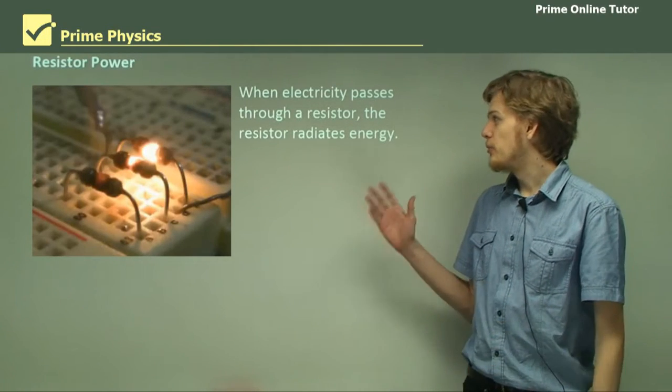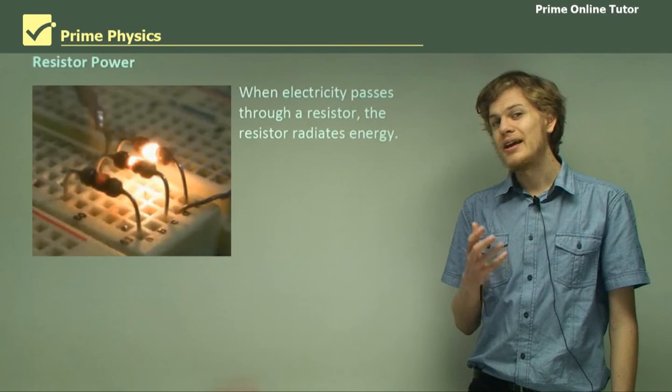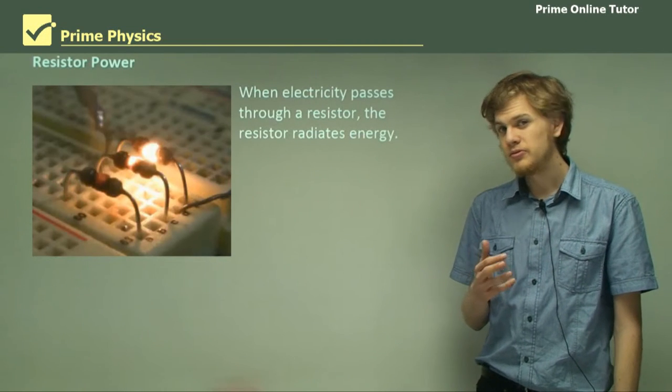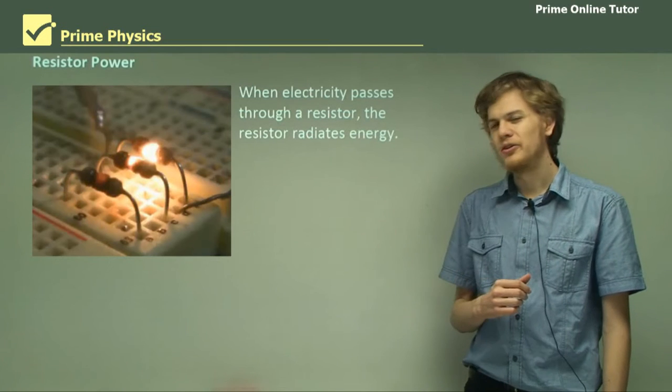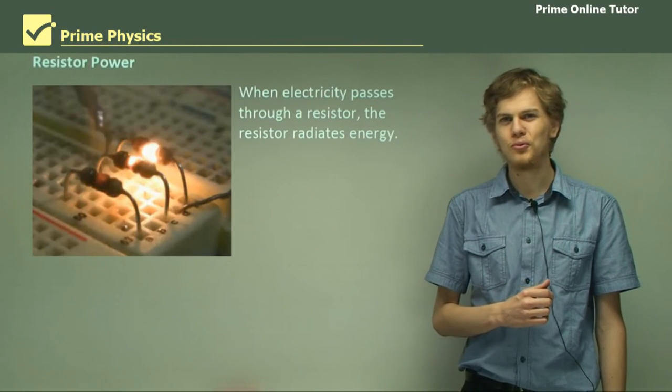Now when electricity passes through a resistor, the resistor will radiate energy. We've studied this a bit before. Over here you can see a photograph of a resistor shortly before it explodes due to the current flowing through it.